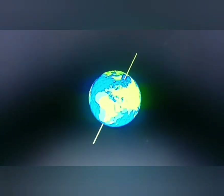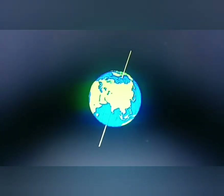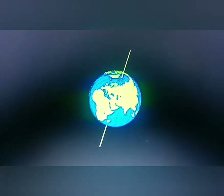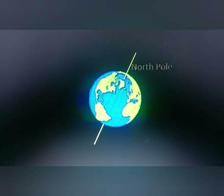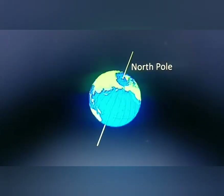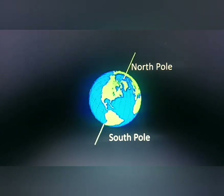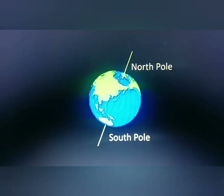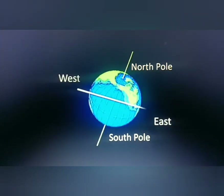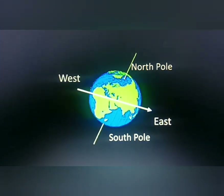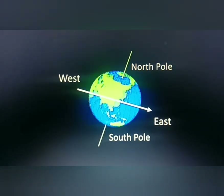A needle is fixed through the globe in a tilted manner, which is called its axis. Two points on the globe through which the needle passes are the two poles — the North Pole and the South Pole. The globe can be moved around its needle, west to east.